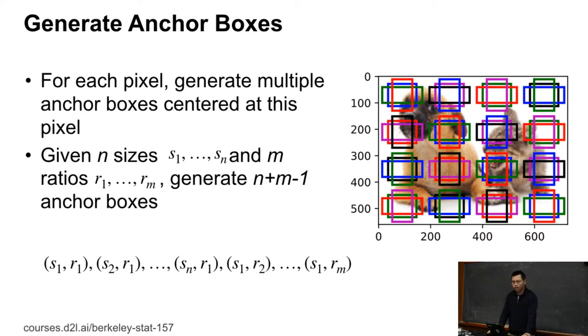For example, if we give n sizes S1 to SN and m ratios R1 to RM. Size means the relative size to the original image. The ratio is the width with height. So then the idea here is generate n plus m minus 1 anchor boxes.